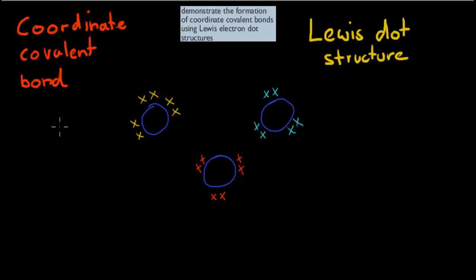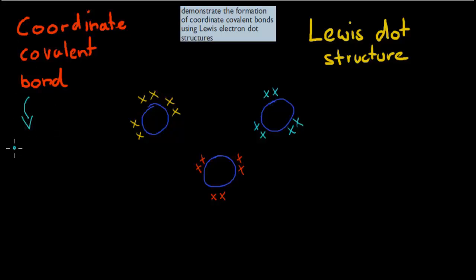Before I cover this dot point in a bit more detail, I quickly want to go over again two really important words or phrases that you should need to know for this dot point. And that is coordinate covalent bond and Lewis dot structure. In the last video we talked about a coordinate covalent bond, and that was just the idea that we have basically a sharing of valence electrons.